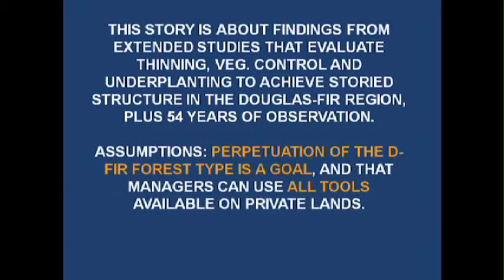I'll start with some caveats. We're going to talk about findings from extended studies that have evaluated thinning in a variety of ways — different levels of thinning, with and without gaps, underplanting, and vegetation control in the understory — with the idea that what we do right now is less important than what we actually get in the long run. We're working backwards from objectives, assuming perpetuation of shade-intolerant species dominated by Douglas fir is a goal, and that managers will have all the tools their neighbors on private lands enjoy.